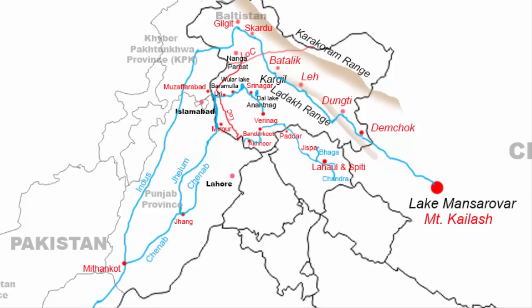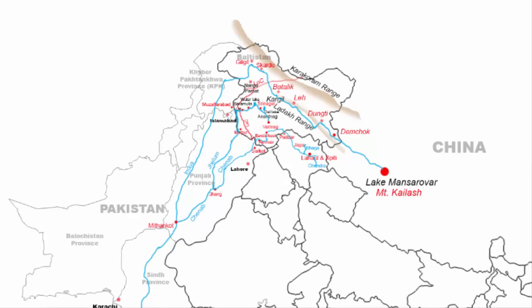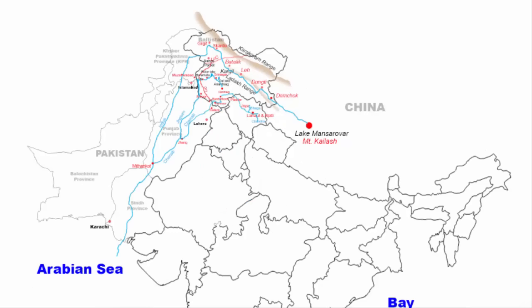Thereafter, the Chenab enters the Sialkot district of Punjab province of Pakistan and flows for about 300 km in the Punjab province. Near the Jhang district, the river Jhelum joins the Chenab. In about 250 to 300 km, the river Chenab joins the Indus River at Mithankot.